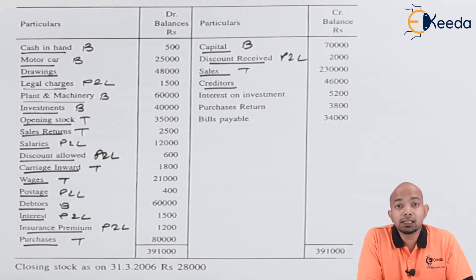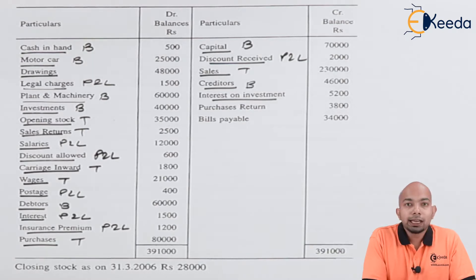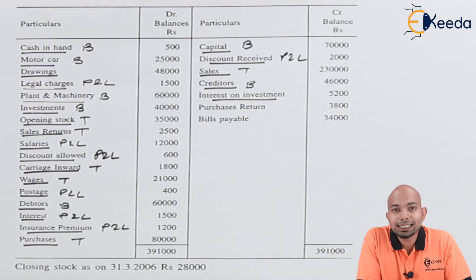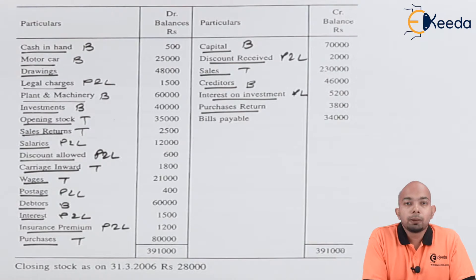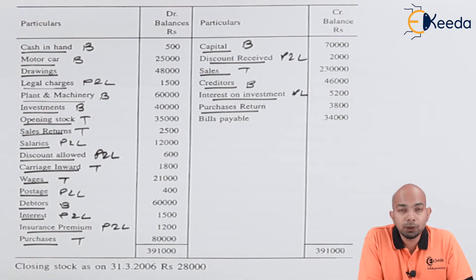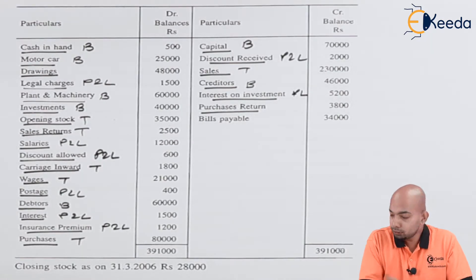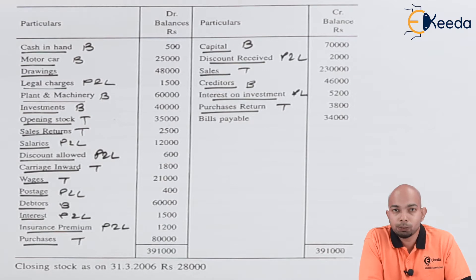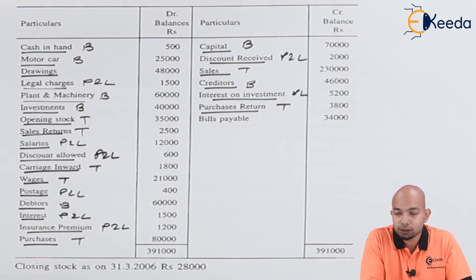Creditors, being sundry creditors, will be a part of the balance sheet liability side. Interest on investment is an income received and is termed under the profit and loss account. Purchase return will be subtracted from the purchase item, hence a part of the trading account. Bills payable will be a part of the balance sheet liability side as it is a liability that has to be paid.